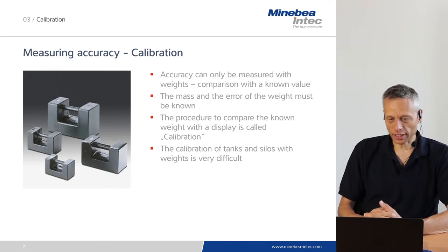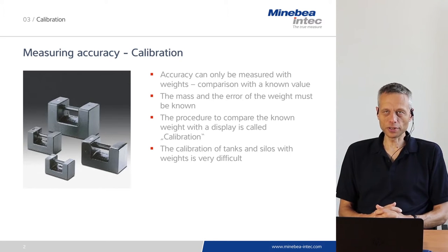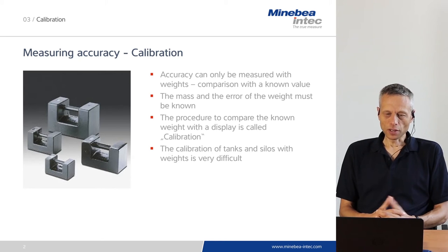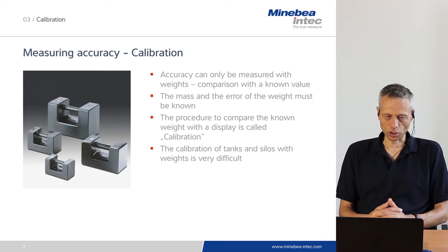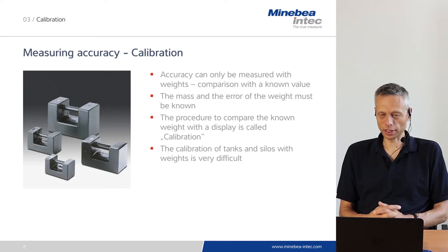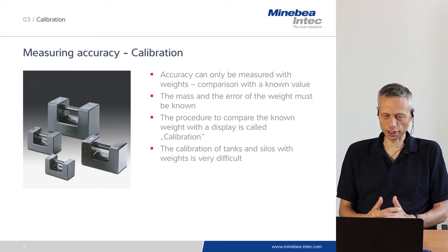Accuracy of a process vessel scale can only be measured with weights. That means a known weight has to be compared with the display readout, and possible differences need to be corrected. The mass and the error of the calibration weight must be known. This is a reference weight, and the procedure to compare the known weight with the display is called calibration. We also make a difference between just the readout and the correction of the difference, which is called adjustment if we correct the difference.